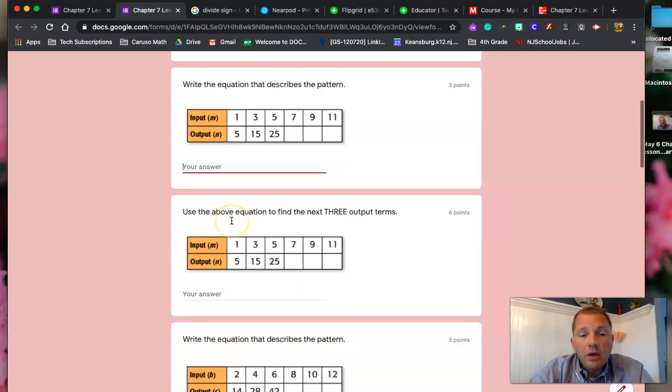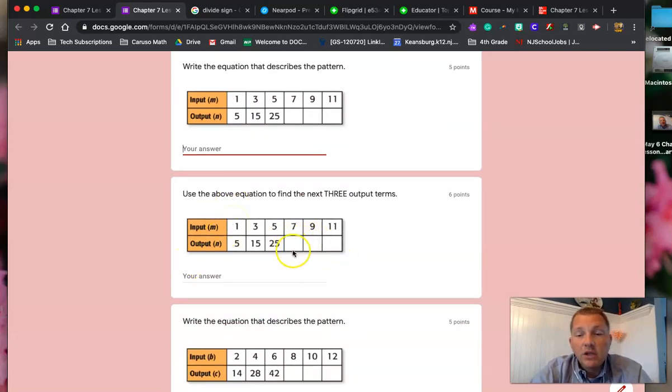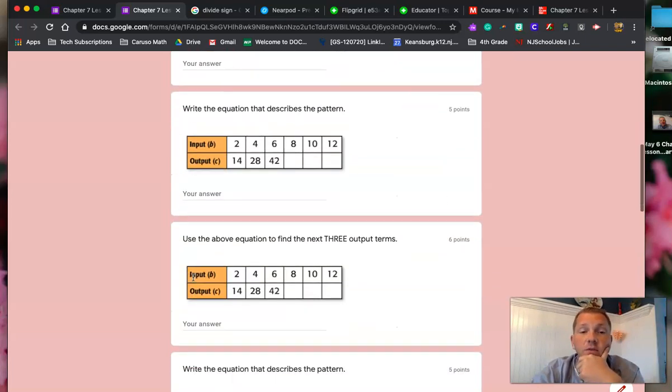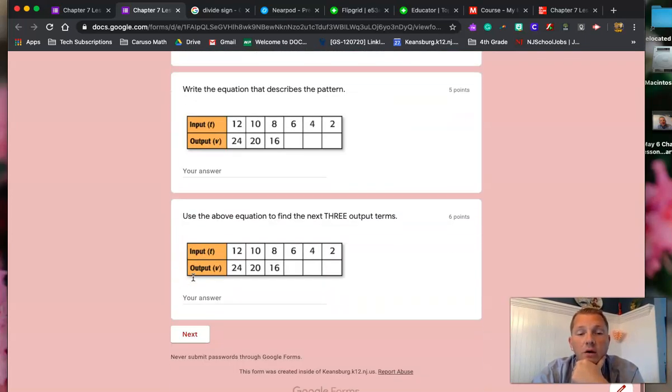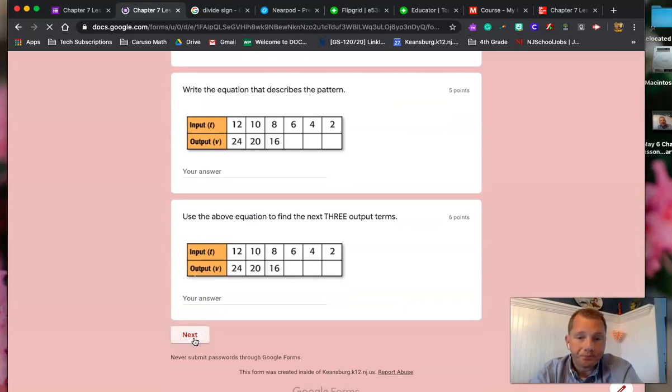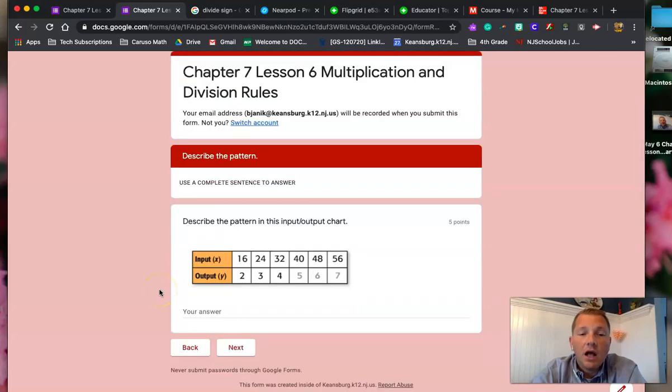Multiplication symbol. Just use the X, as in the letter X, as your multiplication. So this, you're going to write out the equation. Here, you're going to tell me the missing three digits. There's three empty spaces, so there has to be three digits here. Same thing for this one. What's the equation? Multiplication or division? And we're going to move that all the way through that whole section. In this section, I need you to describe the pattern that you see. So like we did on the last one, what do you notice between the input and the output? How much is this changing? How much is that changing? And tell me about it.